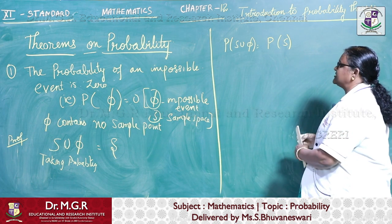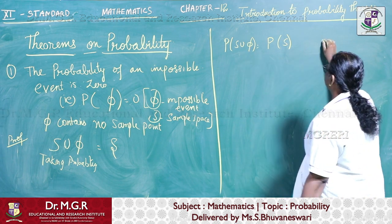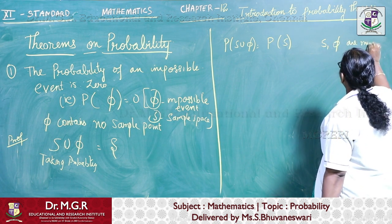But how can I write P of S union phi? S and phi are mutually exclusive.